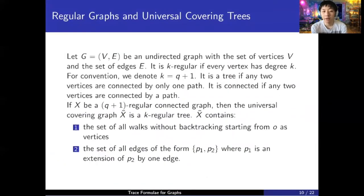And the Poincaré upper half plane is actually very, very like the regular graphs. So if G is, I mean, K regular trees. If G is VE, an undirected graph with a set of vertices V and a set of edges E, we say that G is K regular if every vertex has degree K. And for convention, we know K to be Q plus 1 for technical reason. We say that G is a tree if any two vertices can be connected by one and only one path. It is connected if any two vertices can be connected by at least one path. So if X is Q plus 1 regular connected graph, then the universal covering graph X tilde, which contains the set of all walks without backtracking from an origin and a fixed point O as vertices, the set of all edges of the form P1, P2, where P1 is an extension of P2 by one edge. This universal covering graph X tilde becomes a K regular tree. And also K is just Q plus 1.